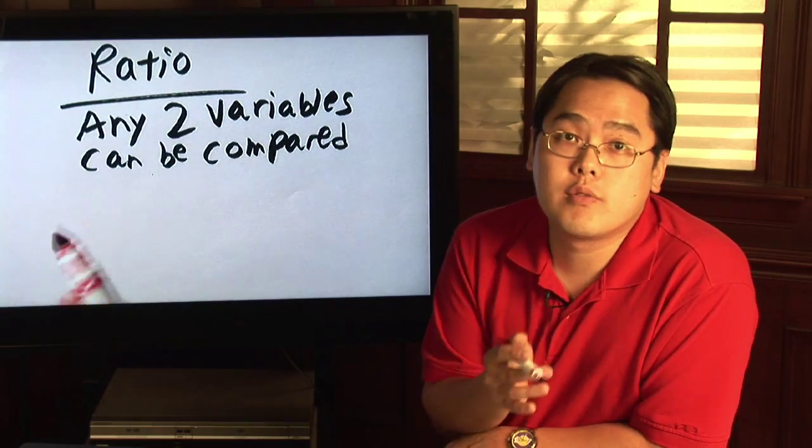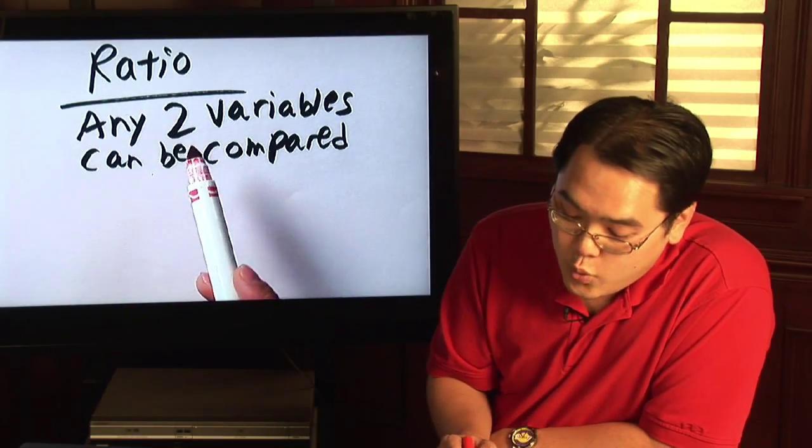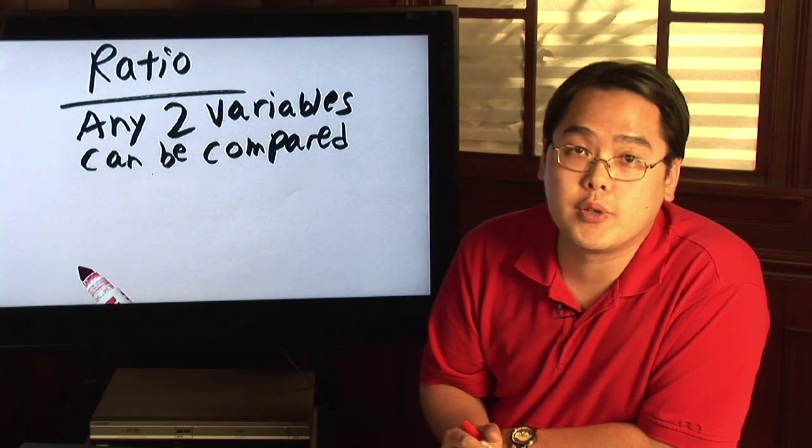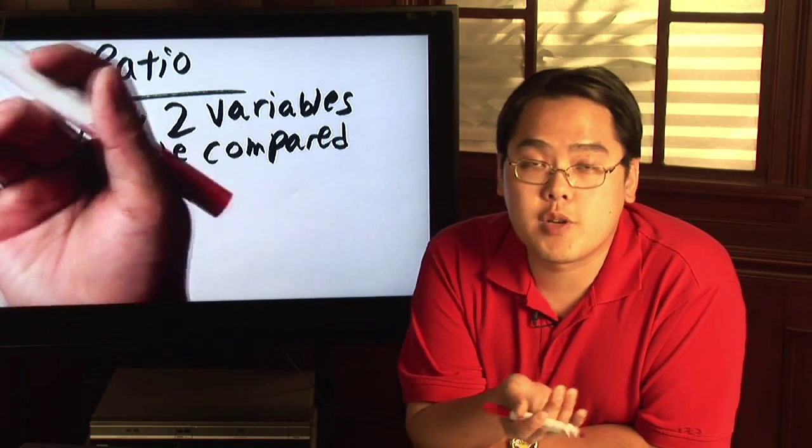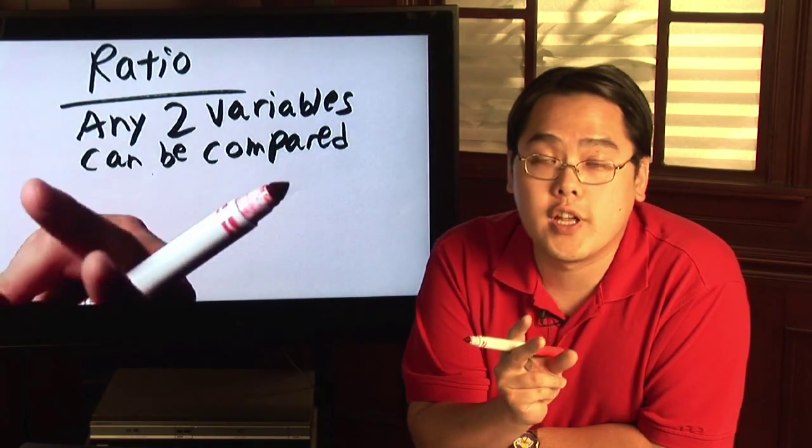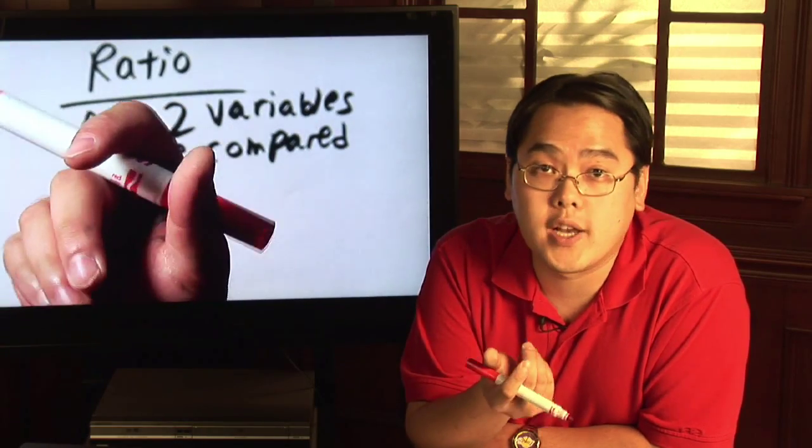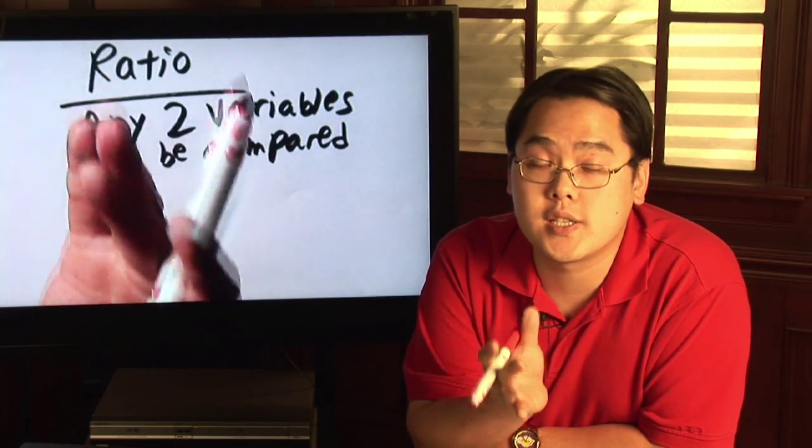Now a ratio is a fraction where you can compare any two variables. As long as there's a relationship between the variables, you can convert it into any fraction any way you want. You can invert it, but you have to be consistent in your decisions.